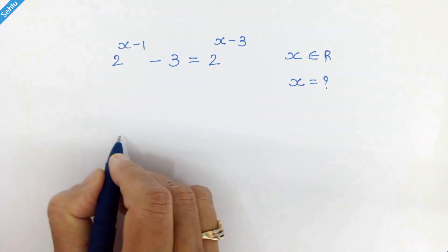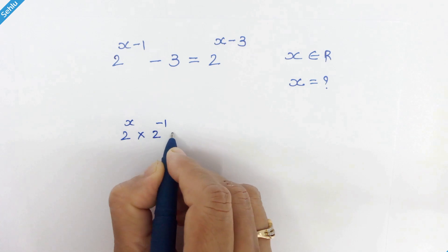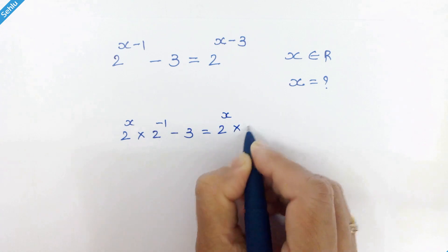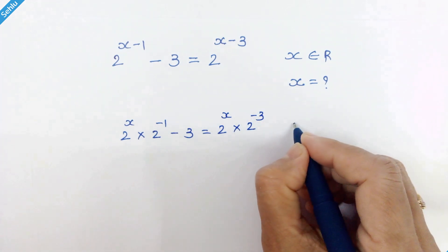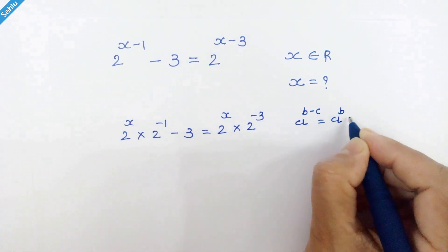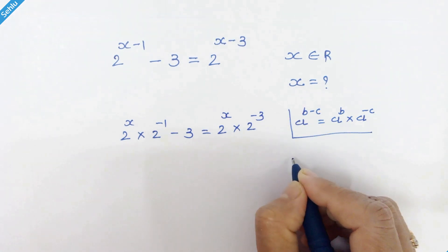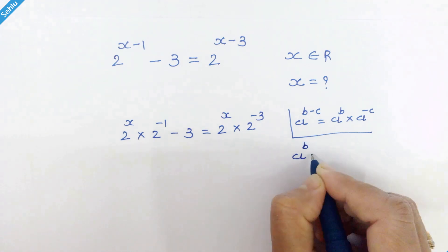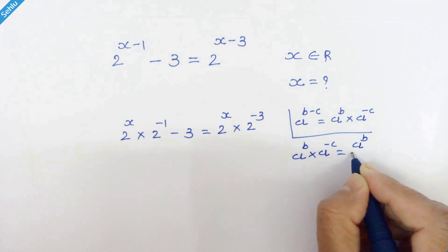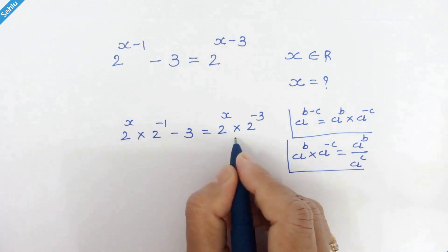We can write this expression as 2 raised to x times 2 raised to minus 1 minus 3, equal to 2 raised to x times 2 raised to minus 3, because if we have a raised to b minus c, it can be written as a raised to b times a raised to minus c. Now, if we have a raised to b times a raised to minus c, it can also be written as a raised to b upon a raised to c, and we will use this rule here and here.